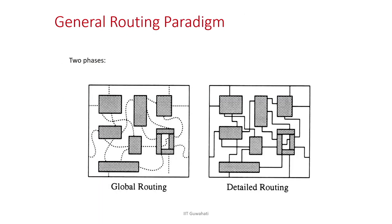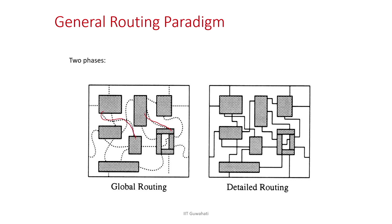Once you place the blocks, you know what connections you have to make. For a given connection, you see through which paths the wire will go — maybe through this block and that block. You could also route it another way, using different areas. Global routing determines exactly which spaces will be used to make the connections.